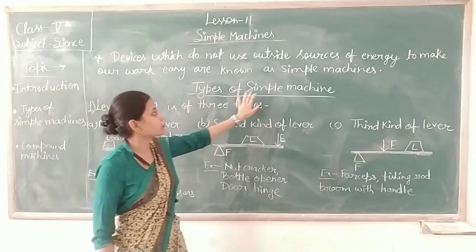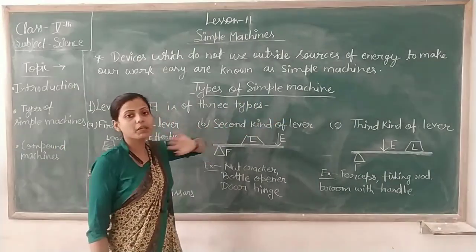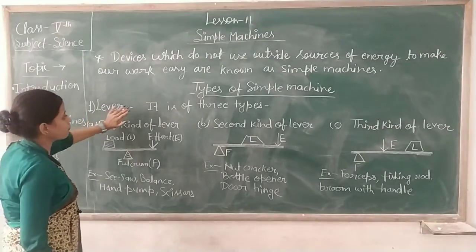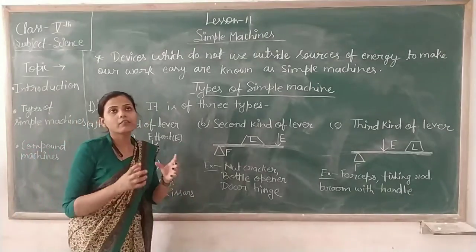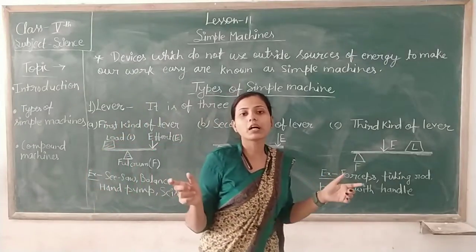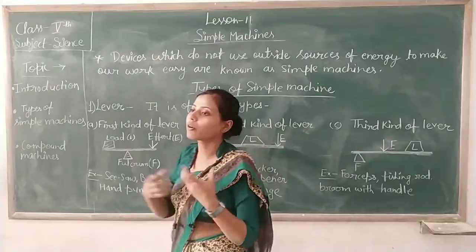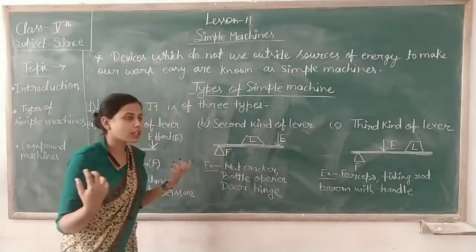اس کے بعد ہے next types of simple machines. پہلے ہم جانیں گے lever کے بارے میں. Lever کیا ہوتا ہے? Lever ایک سیدھا rod ہوتا ہے. Wood کا یا iron کا بنا ہوا. Wood یا iron کا بنا ہوا rod ہوتا ہے جسے ہم lever کہتے ہیں.